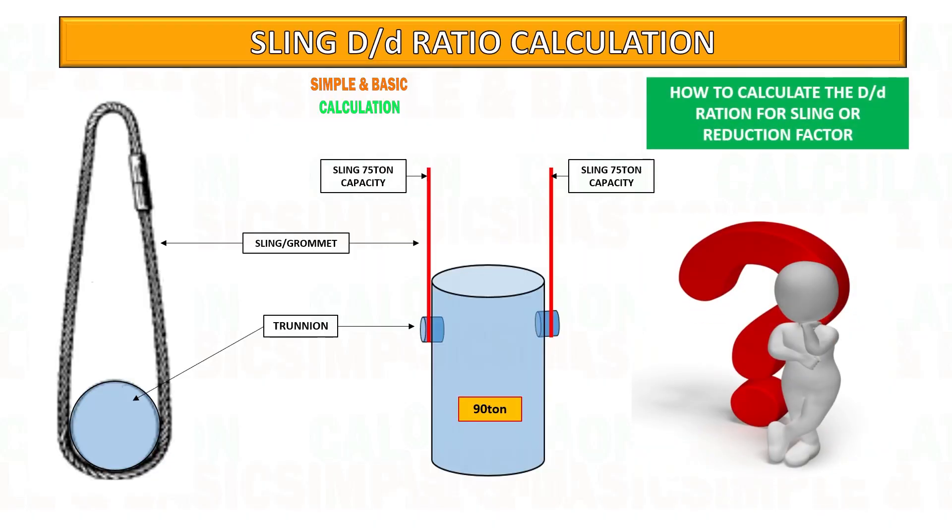In this video, you will learn how to calculate the D/d ratio or reduction factor on the sling. Whenever a sling bends around another object, there will always be a loss of sling capacity.